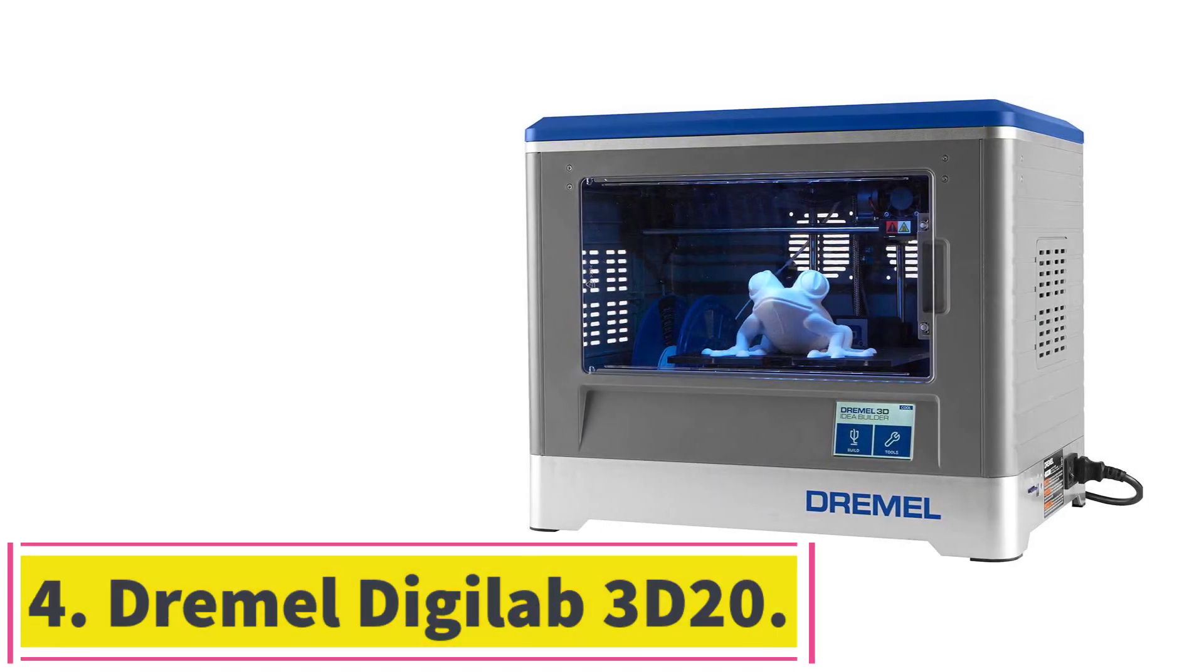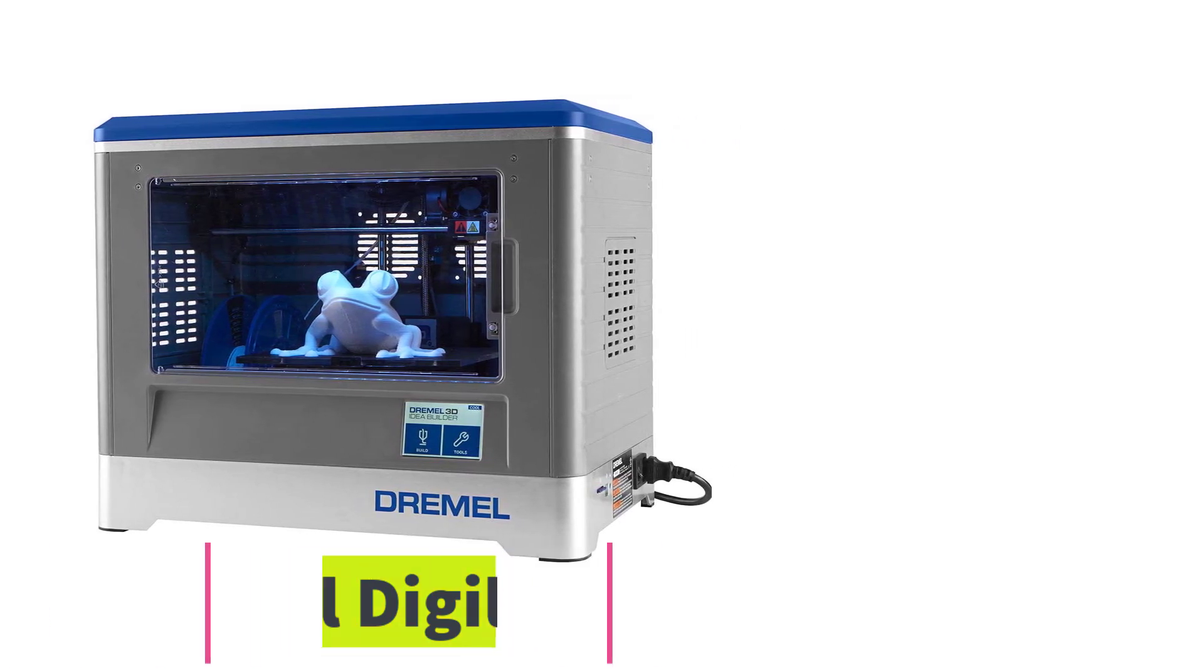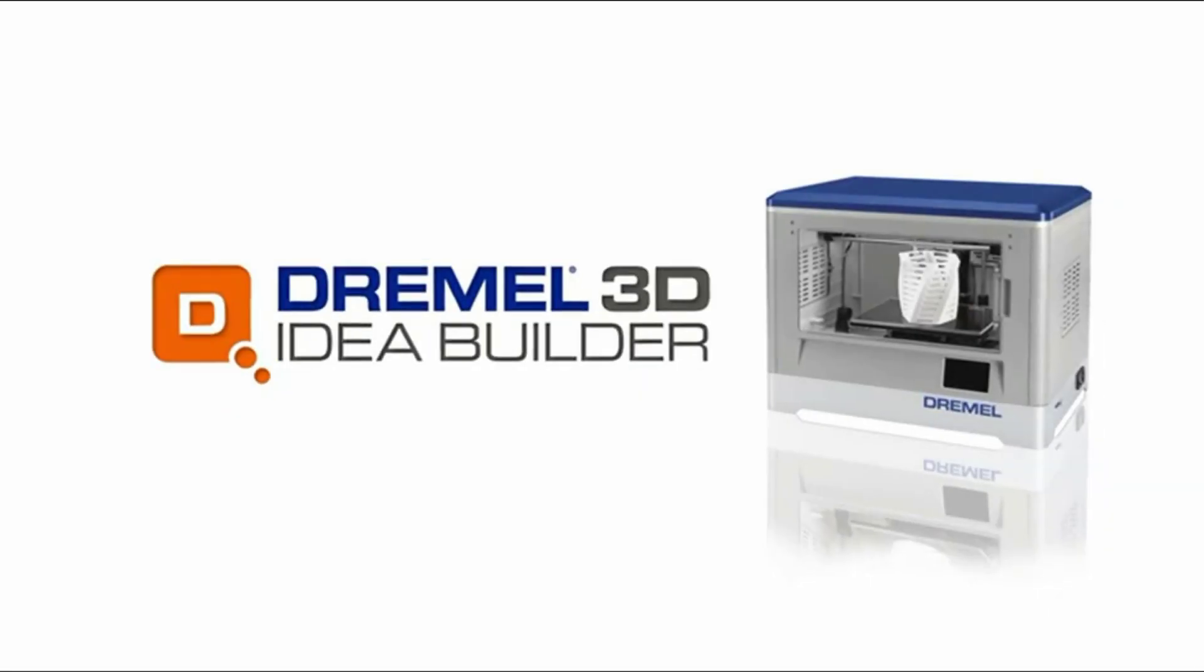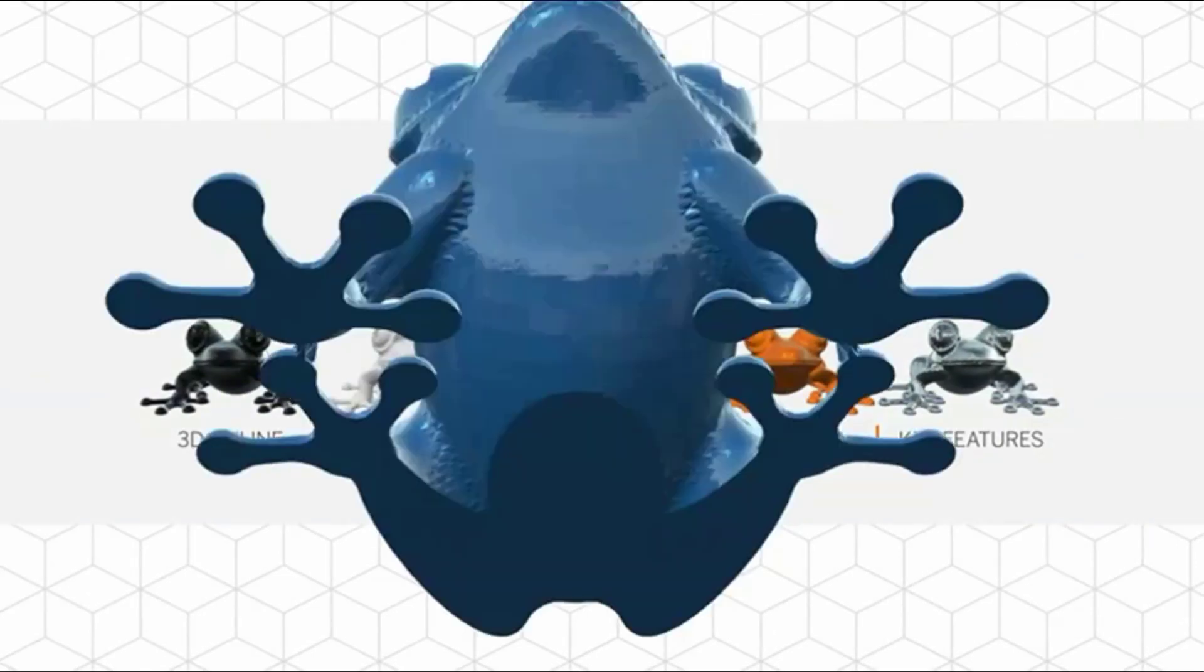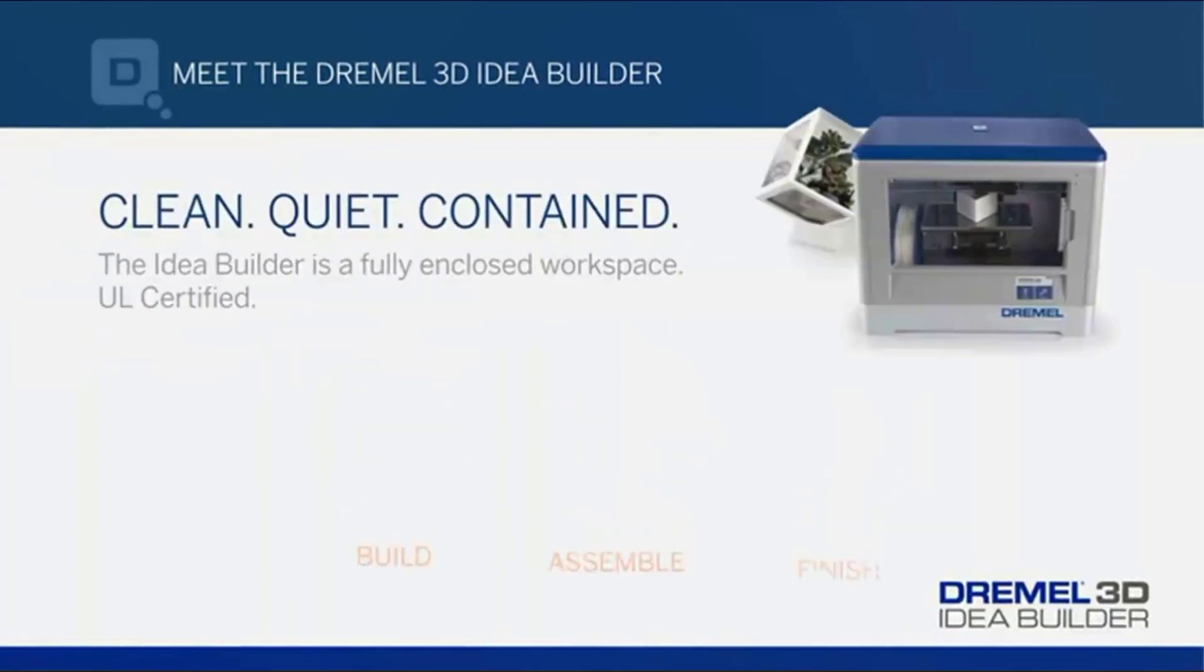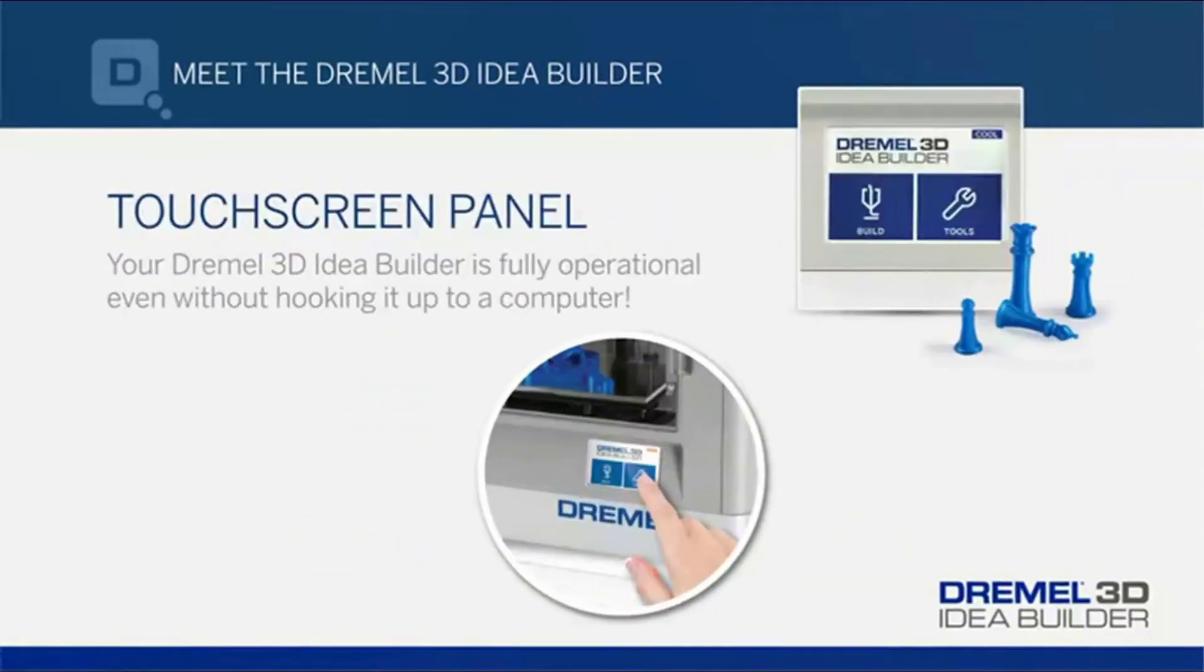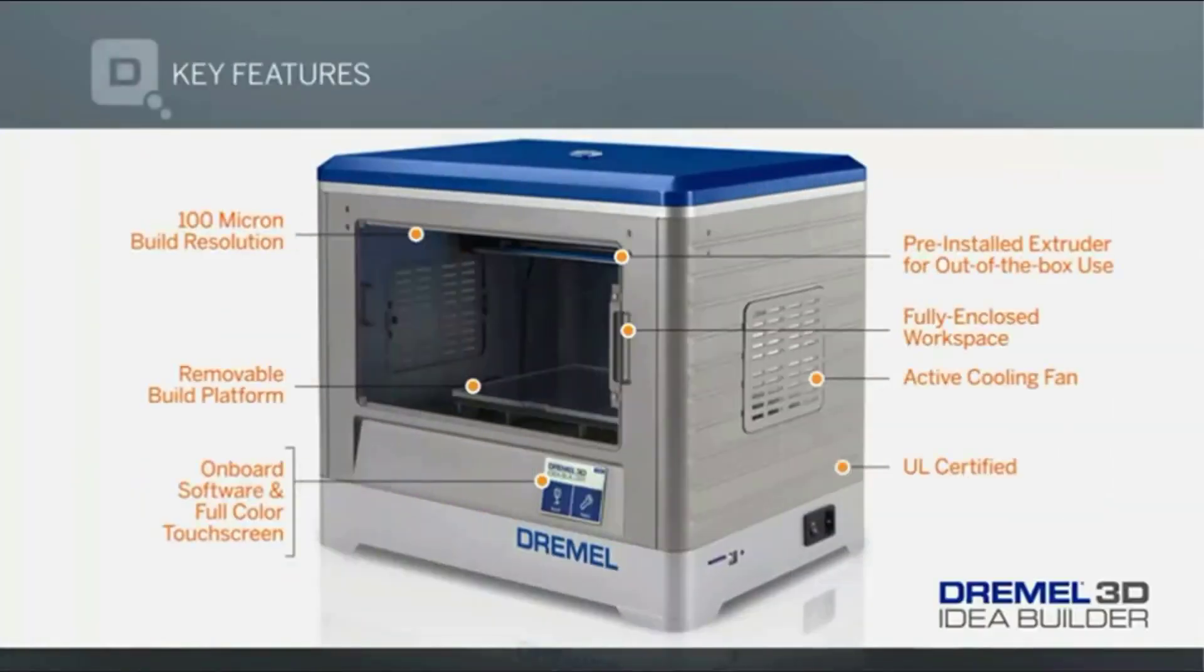Number 4, Dremel Digilab 3D20. This is an affordable 3D printer for jewelry, which is suitable for amateurs and beginners. Thanks to a plain design and great customer support, you can create amazing prints even if you don't have any prior experience. This model is fully assembled and comes with a 0.5kg spool of Dremel filament. Using simple setup instructions, you can quickly start printing.